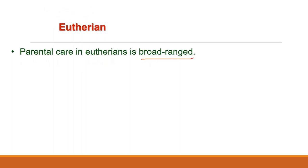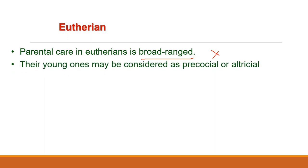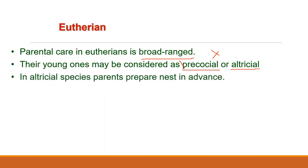In case of Eutheria, parental care in eutherians is broad-ranged since these placental mammals do not have a brood pouch. The newly born young must therefore either be sufficiently advanced to be capable of independent locomotion and keeping warm, or they must be protected in some type of nest. Broadly speaking, the young ones may be considered as precocial or altricial. Behavior related to the care of young normally begins during pregnancy. For altricial species, parents prepare a nest in advance, and this activity is generally initiated or intensified during pregnancy. Nest building is primarily the task of the female or both male and female.